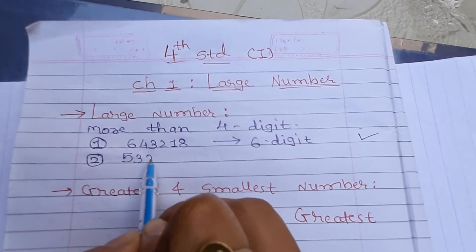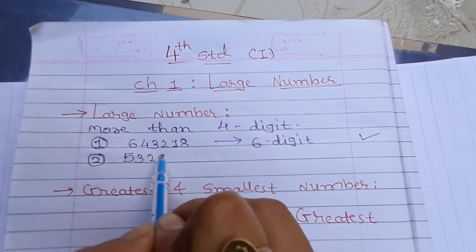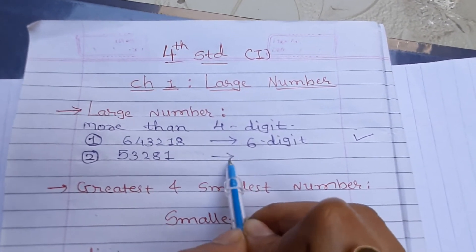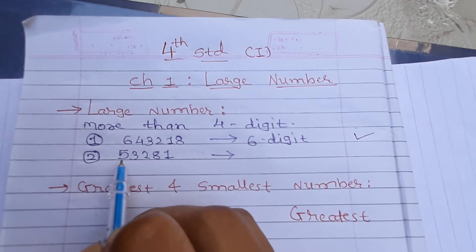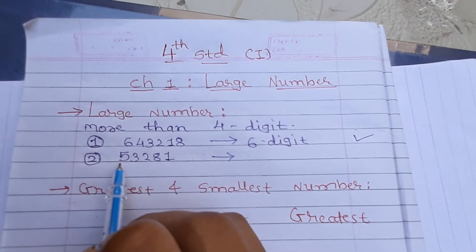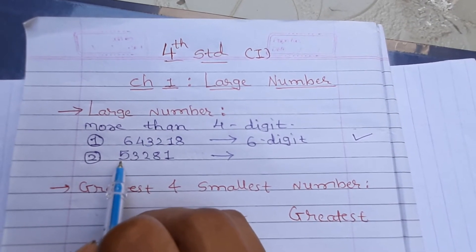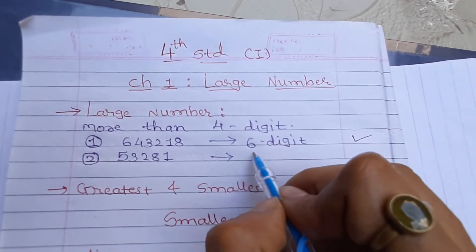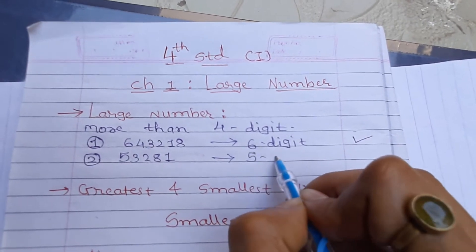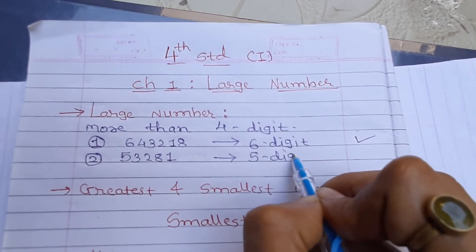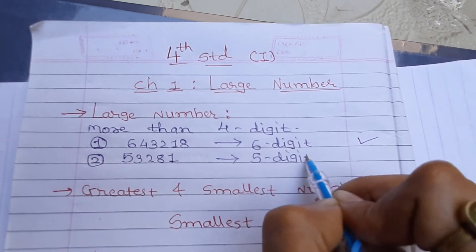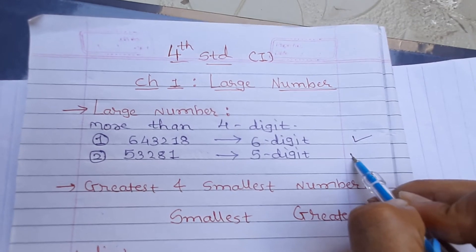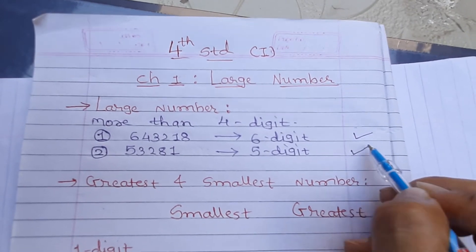Second example: if the number is 5 3 2 8 1, is it a large number? Let's count the digits: one, two, three, four, five. So it is also a five-digit number, which is more than four digits. So it is also called a large number.